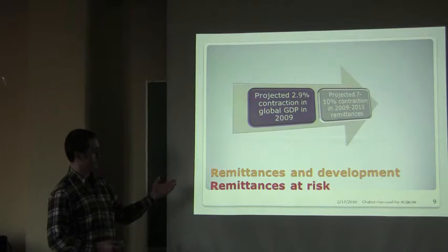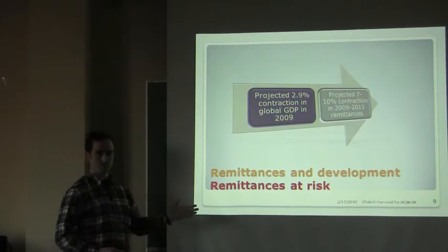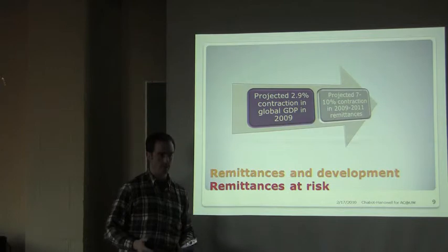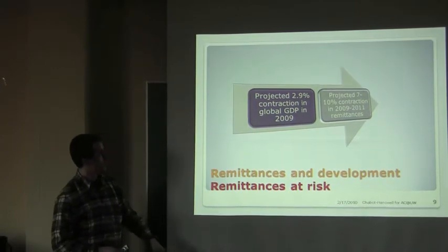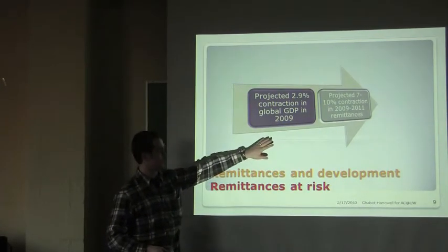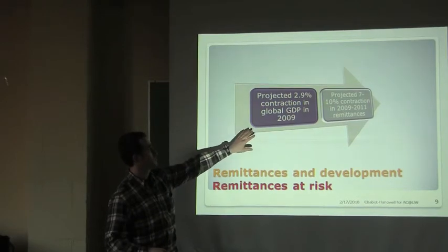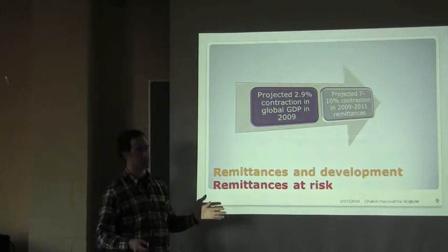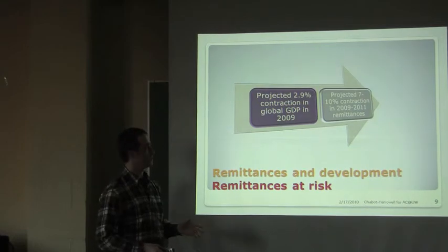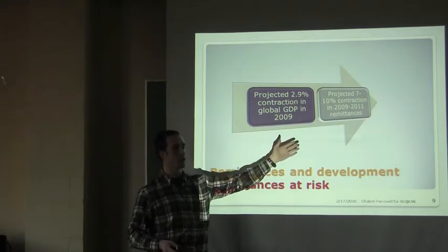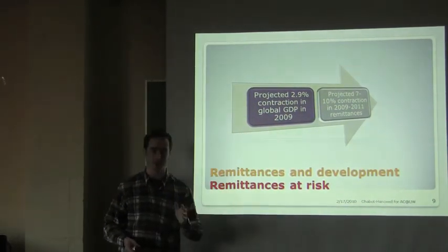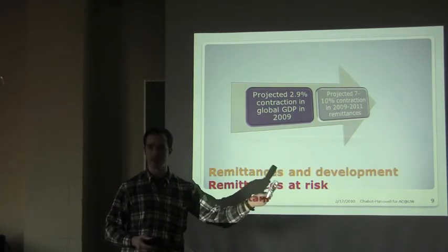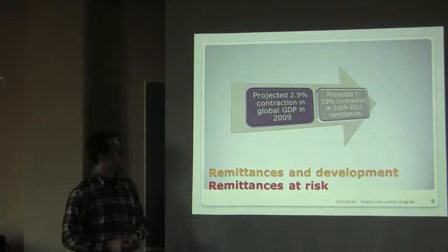Another reason remittances are imperfect at poverty reduction is because they're vulnerable to the global economy and its vicissitudes. In 2009 there was a projected 2.9% contraction in global GDP, which led to a projection of 7 to 10% contraction in the remittance economy within the next two years.